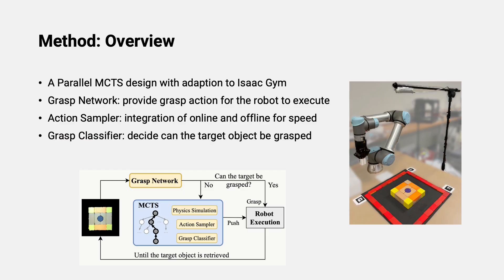To effectively combine MCTS and parallel physics simulation for solving long horizon episodic planning tasks, our system has several key components that work closely together. We have a grasp network that proposes grasp actions for the target object, if any. If not, planning is needed to figure out the best push action. In the following slides, we will describe each of these components.